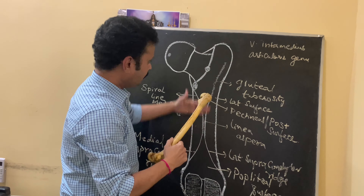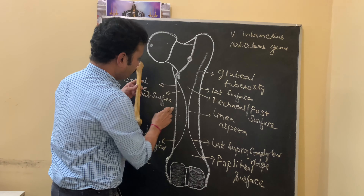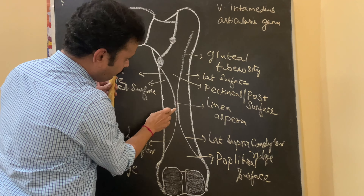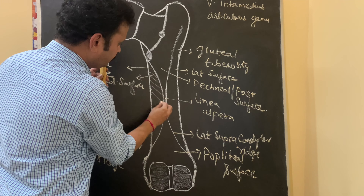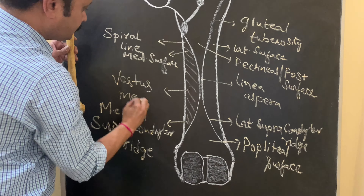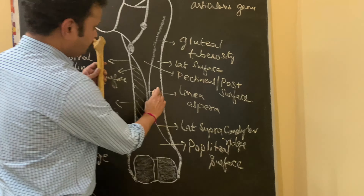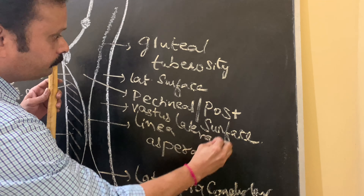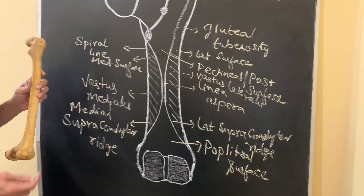Coming to the medial surface, the complete medial surface along with the medial lip of the linea aspera is the site of origin of vastus medialis. Similarly along the lateral surface, it is vastus lateralis muscle that takes origin along the lateral surface of the shaft of the femur.